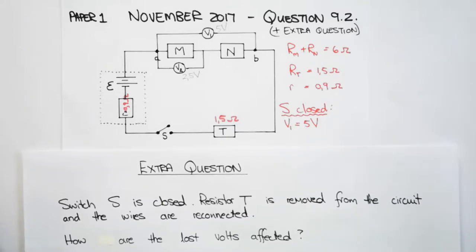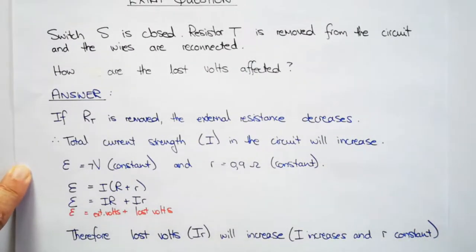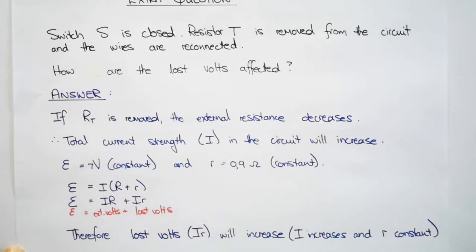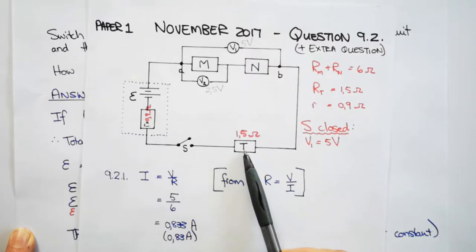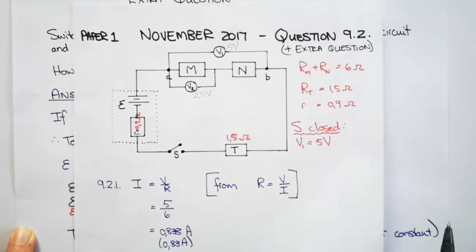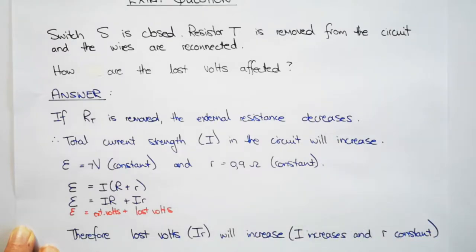So this is the reasoning behind this question. If RT is removed, your external resistance will decrease because RT was in series with resistors M and N. So if you remove RT, your total resistance is going to decrease. If you remove this resistor, your total resistance in your circuit will decrease. Therefore your total current will increase. So write that down. You will get a mark for each of these statements. If RT is removed, the external resistance will decrease. Therefore your total current strength I in the circuit will increase.